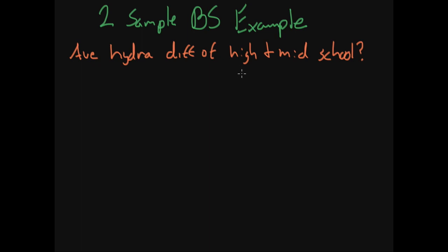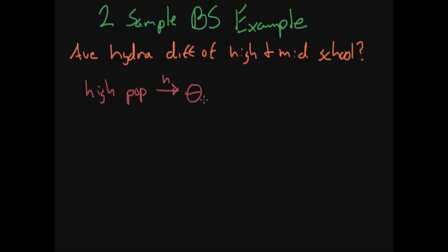So this would be the question of interest. What would we want to do if we had all the money and time in the world? We would look at the population of high schoolers, which I will call the high pop. We would compute the hydration of this, and we get theta sub H — the average hydration of high schoolers, basically.